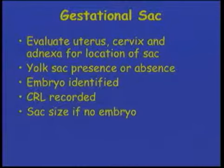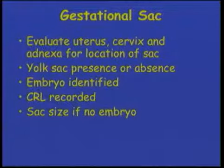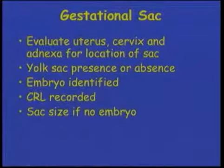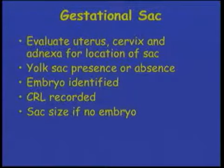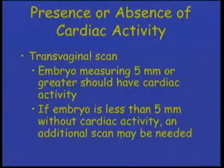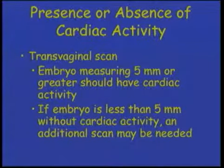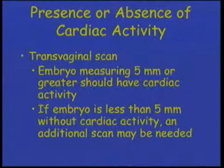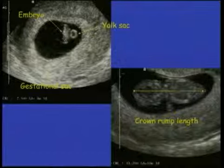In the first trimester, the exam can be done transabdominally, transvaginally, or transperineally, whichever is appropriate for the clinical situation. We should look for the gestational sac and evaluate the uterus, cervix, and adnexa for its location. We should identify the presence or absence of the yolk sac, whether the embryo is identified, and record the crown rump length if an embryo is visible. If we cannot see the embryo, we should measure the sac size. Cardiac activity should be visible by the time the embryo measures five millimeters or greater. If the embryo is less than five millimeters, lack of cardiac activity means an additional exam may be needed to determine viability.